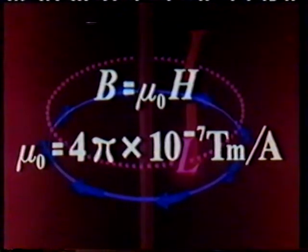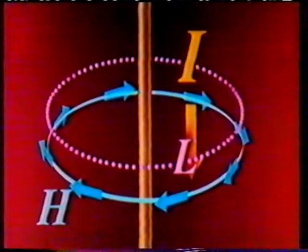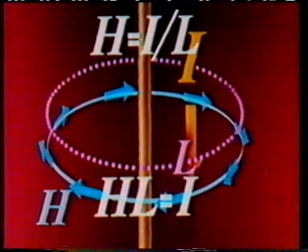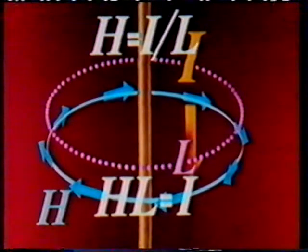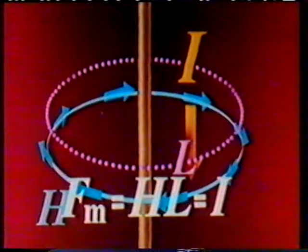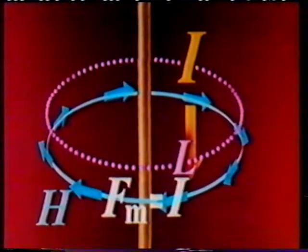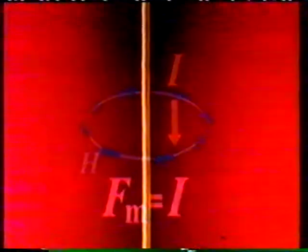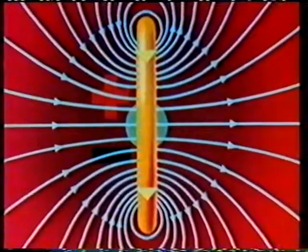For any circle around the wire, H equals I over L, or HL equals I. The product HL is called the magnetomotive force around the circle, and is denoted by Fm. The formula can now be restated in a more general form: the magnetomotive force along a closed path is equal to the current I enclosed by it. If the conductor is bent to form a current loop, the lines of induction will bend with it.